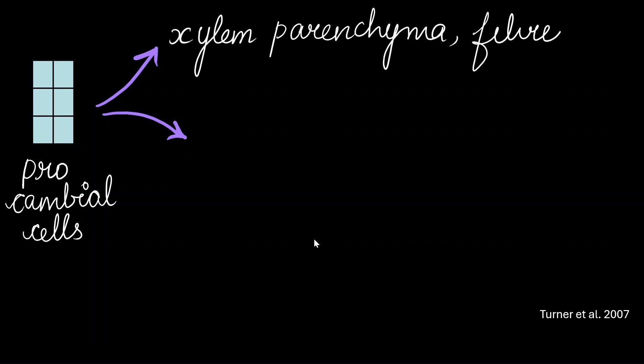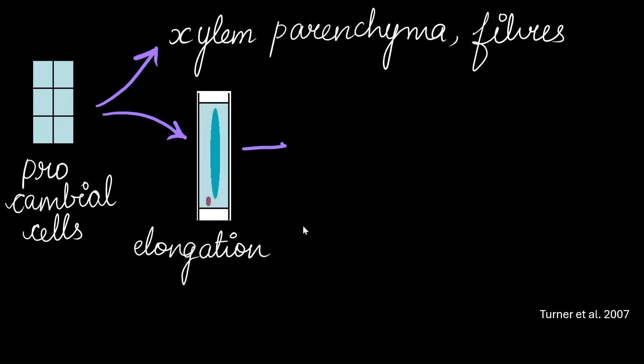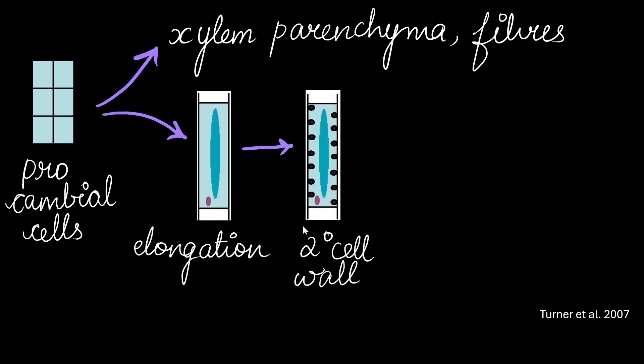Another example is how the tracheary elements are formed within the vascular bundles. Vascular tissues come from prochambial cells, and all of the vascular cells come from them. They also give rise to xylem parenchyma, xylem fibers, etc. Some of the prochambial cells undergo elongation, and then they develop secondary cell wall, which is made up of lignin and cellulose.